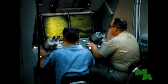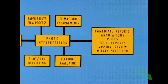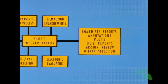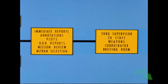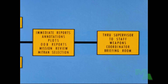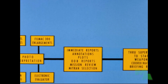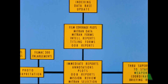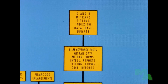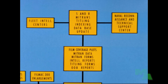As they continue to analyze the intelligence, they have a number of responsibilities. Most important, of course, is to make immediate reports on any new information that will be useful in planning strikes. The IOIC supervisor will see that pertinent information obtained by the mission is forwarded to the carrier division staff, the weapons coordinator, and the briefing room where missions are planned. As the immediate need for the information is satisfied, provision must be made for incorporating the intelligence into the permanent files of S&R. The PI provides film coverage plots, MITRAN data, intelligence reports, titling forms, and OOB reports. S&R then incorporates this information into the intelligence database. Selected information also goes to the fleet intelligence centers and to the naval reconnaissance and technical support center.